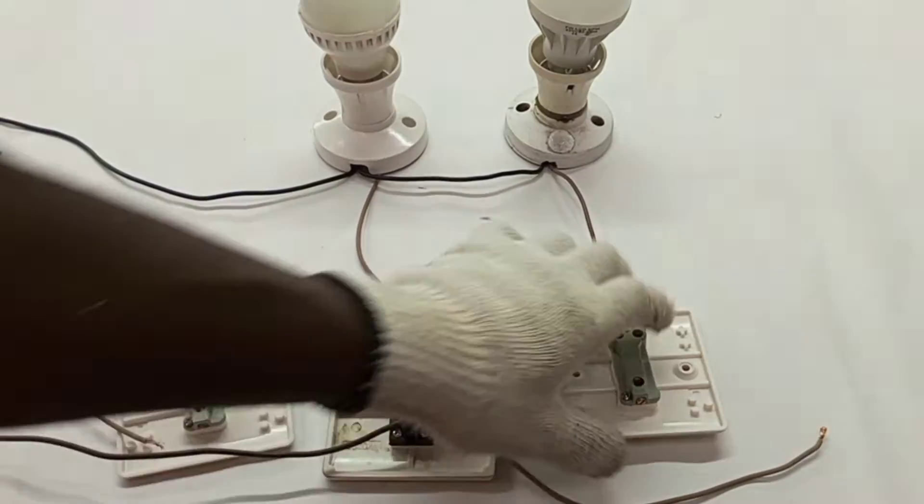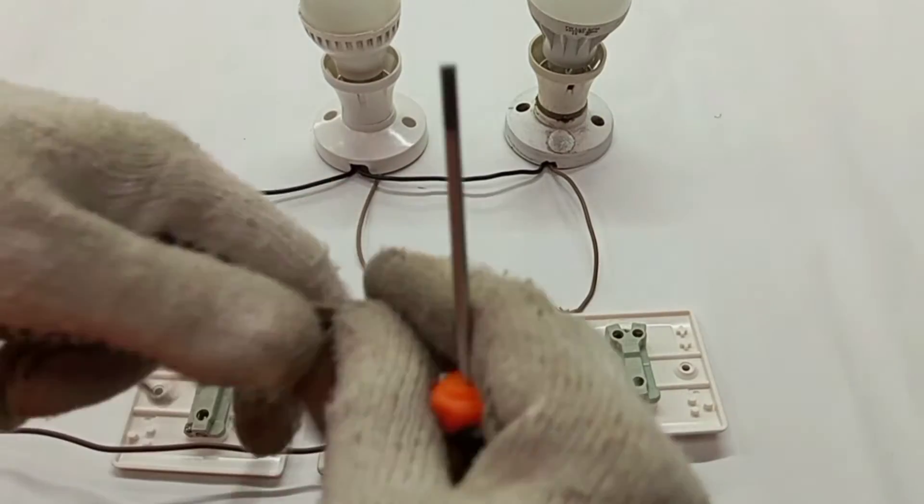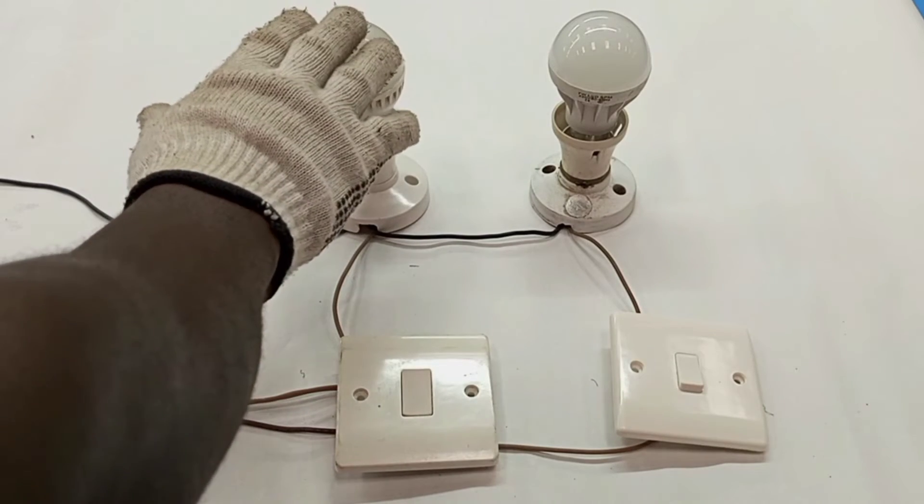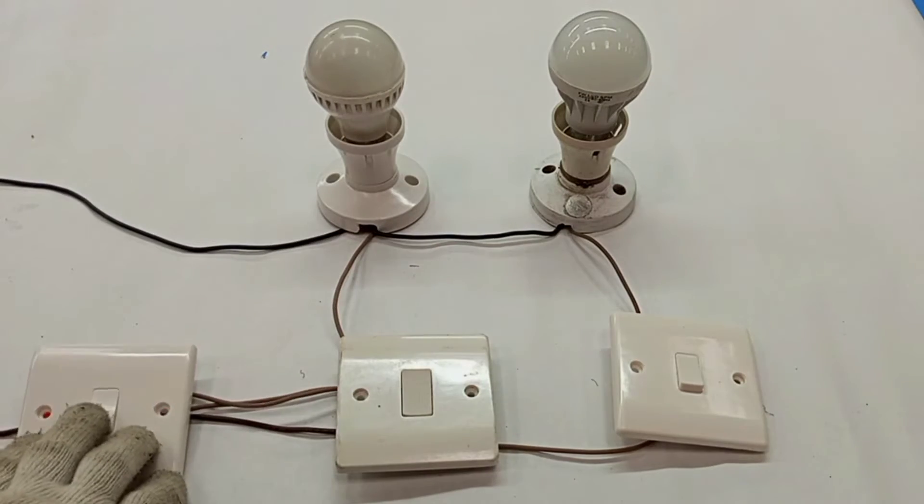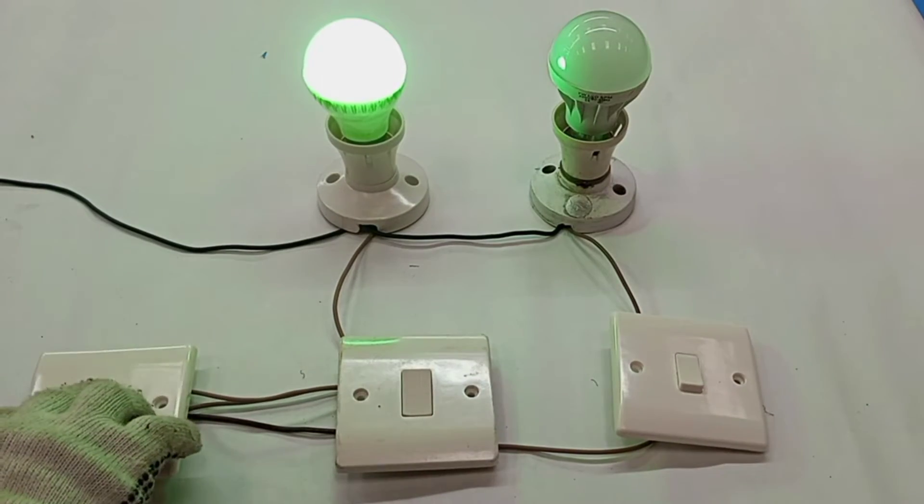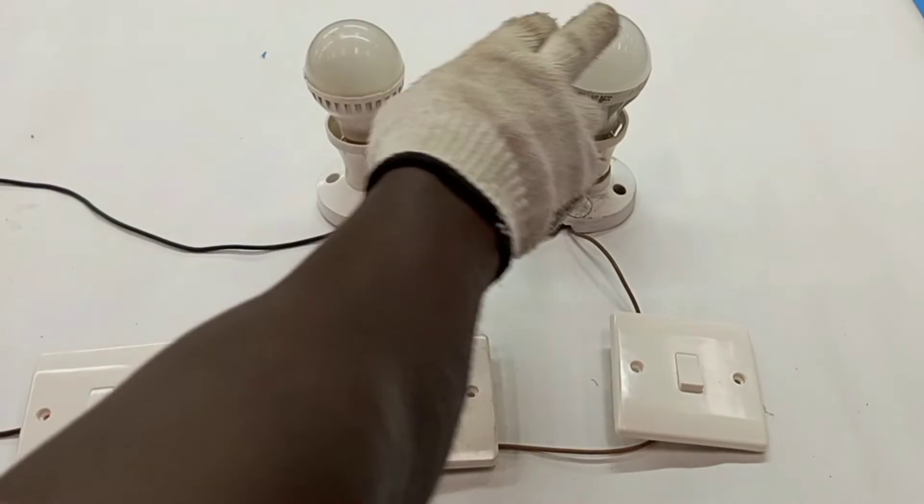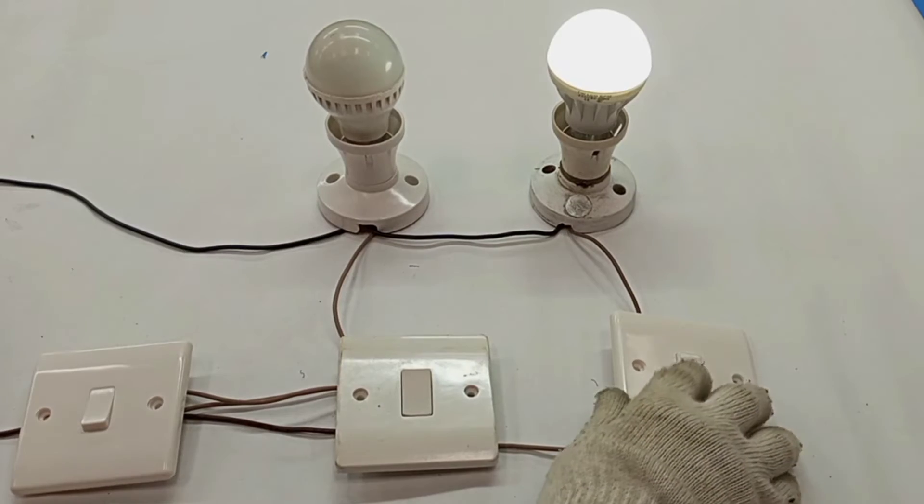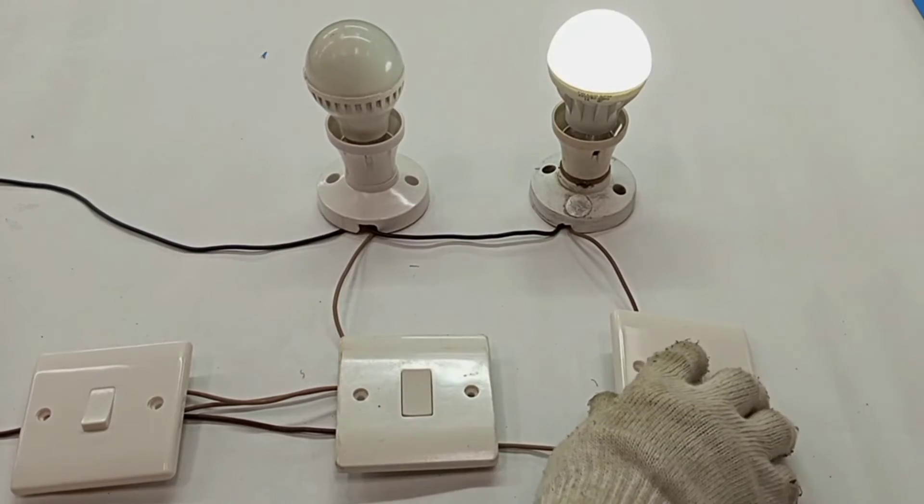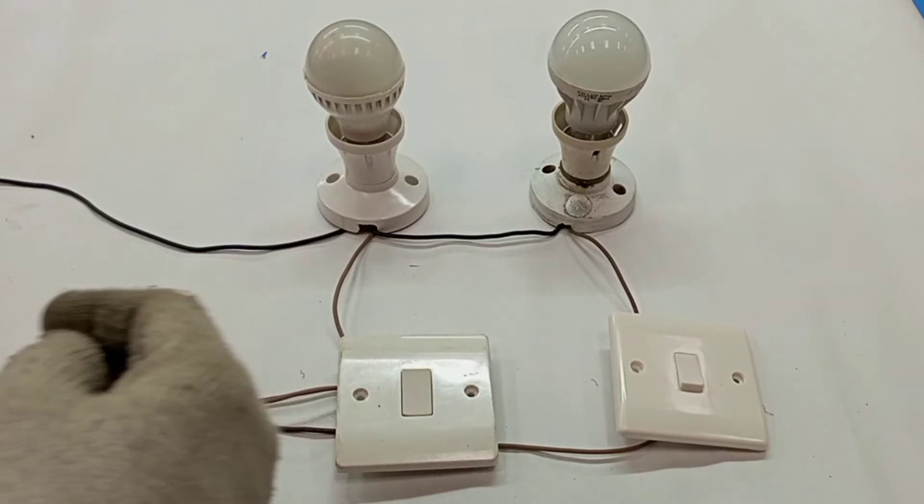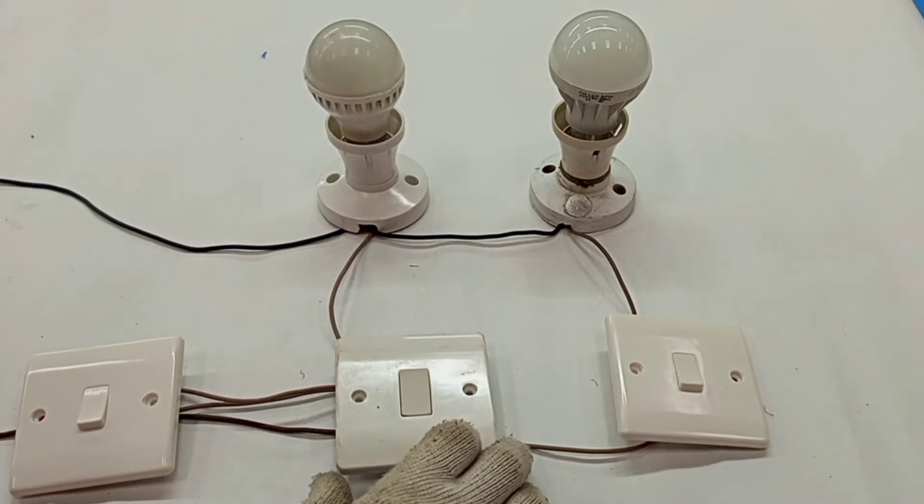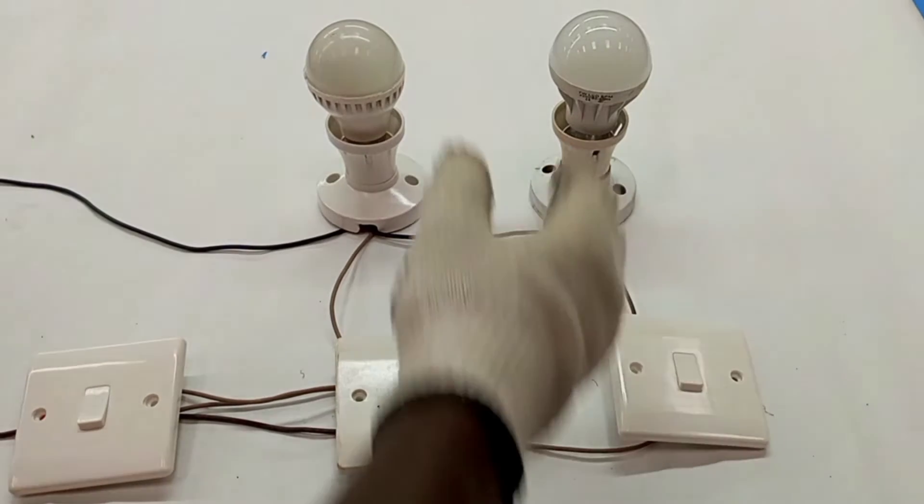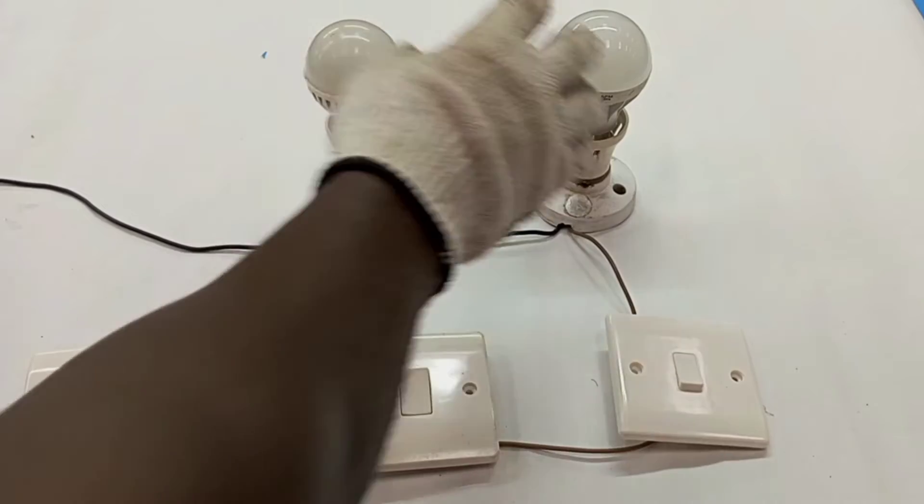For instance, in this wiring, this lamp is required to be controlled by this switch, and then there is another lamp here which is supposed to be controlled by this switch. This at the middle here is now serving as our master switch.